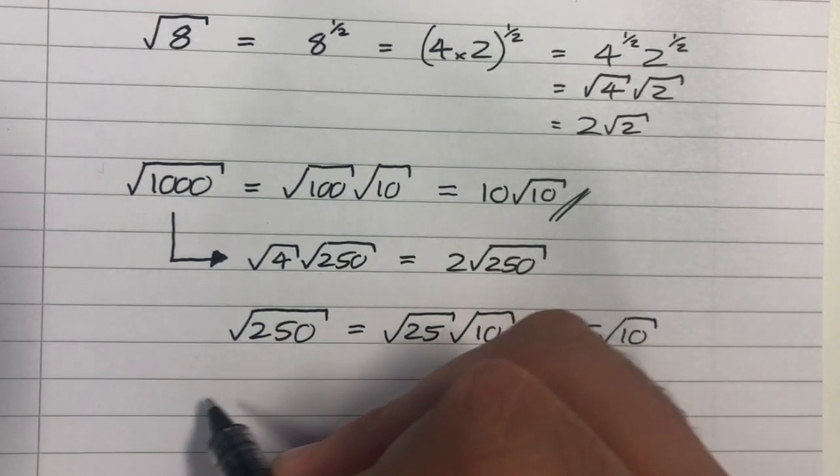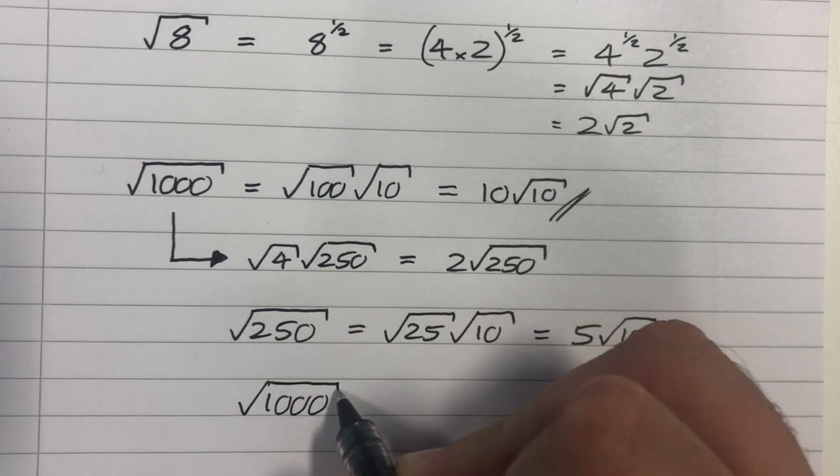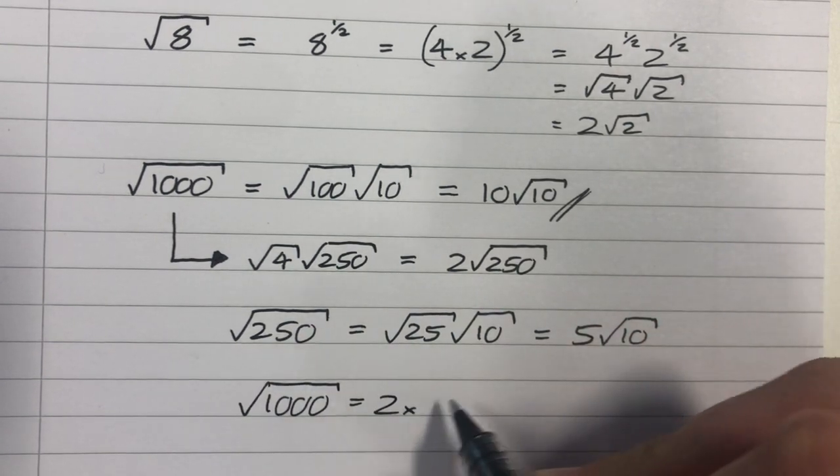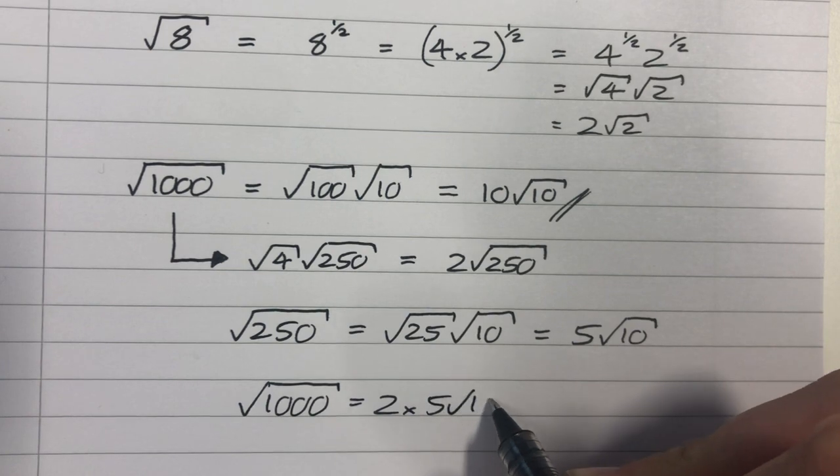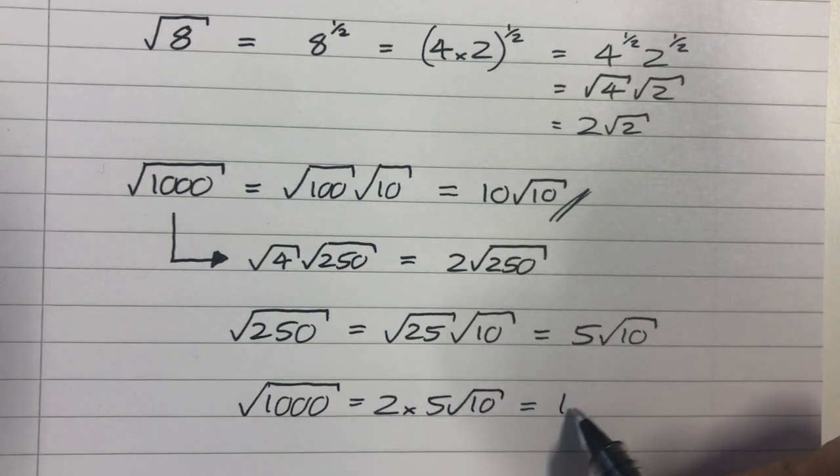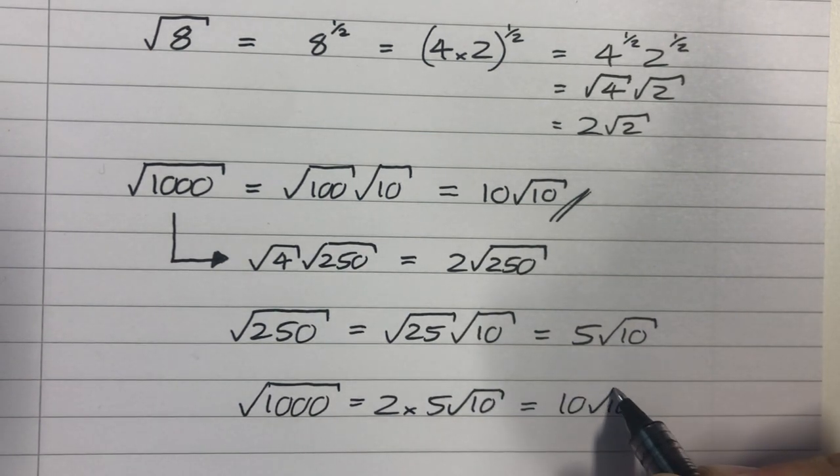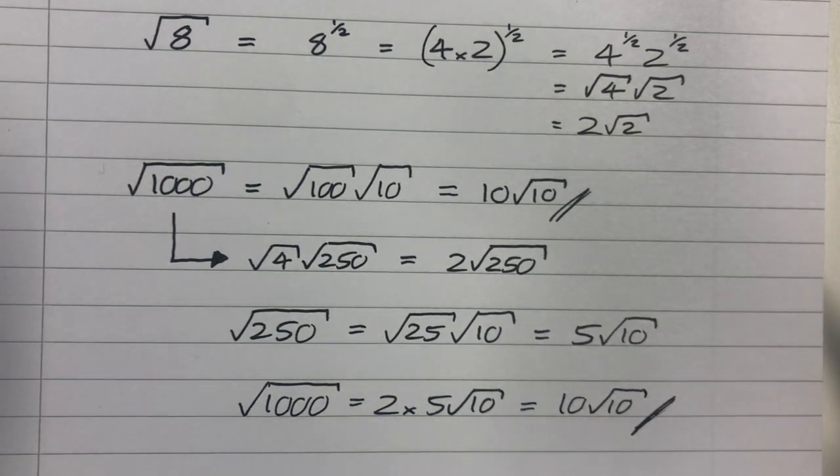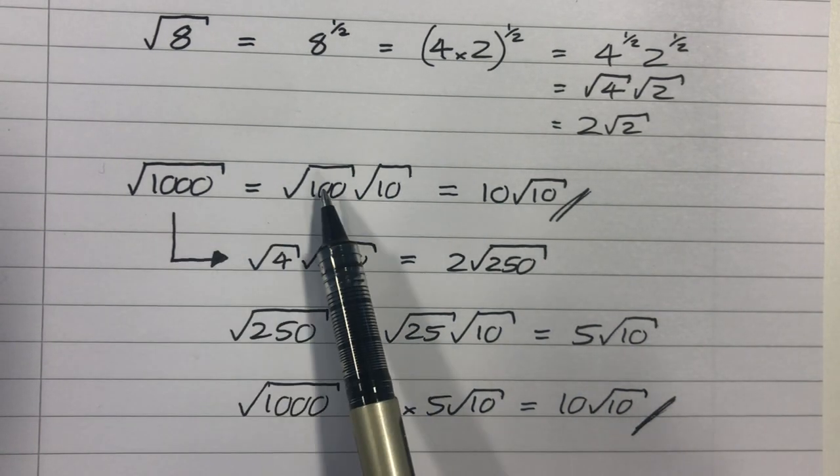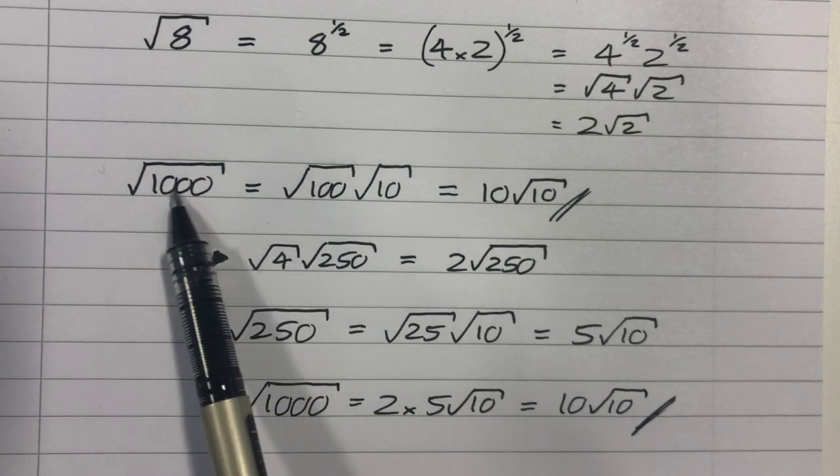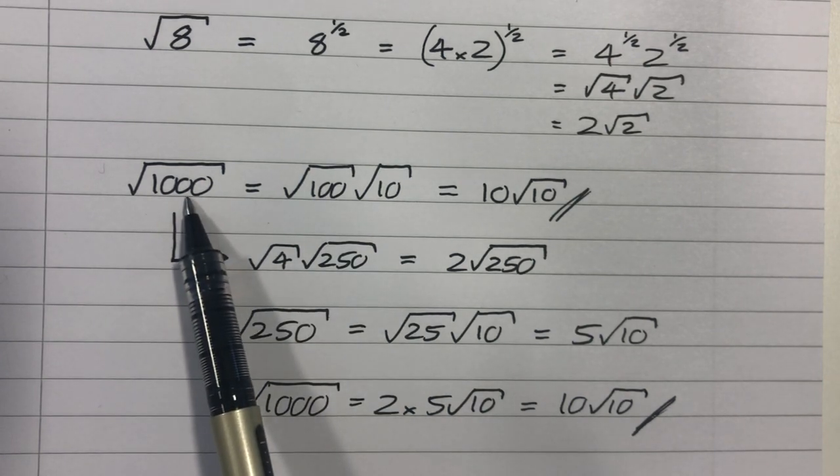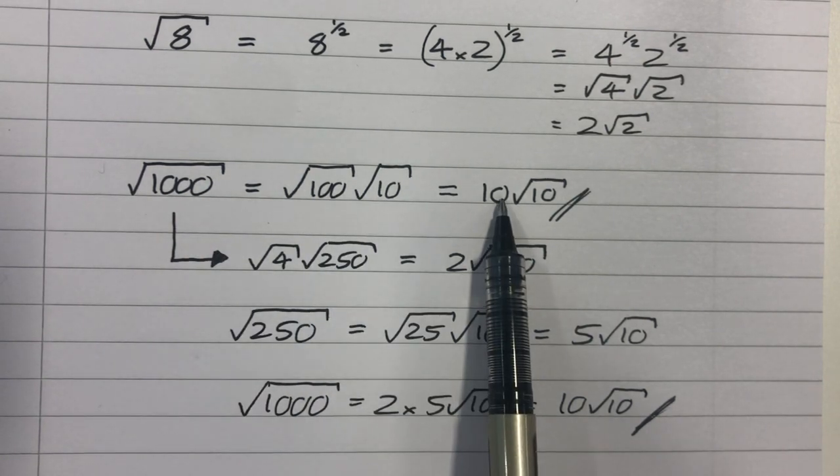Root 10. And now I can use this definition of root 250 in here. So I'll get that root 1,000 is equal to 2 times 5 root 10, which is 10 root 10. And again, we end up at our most simplified state. So it's beneficial to try and find the highest square number that goes into the contents of your surd, because then that will be just the one step.